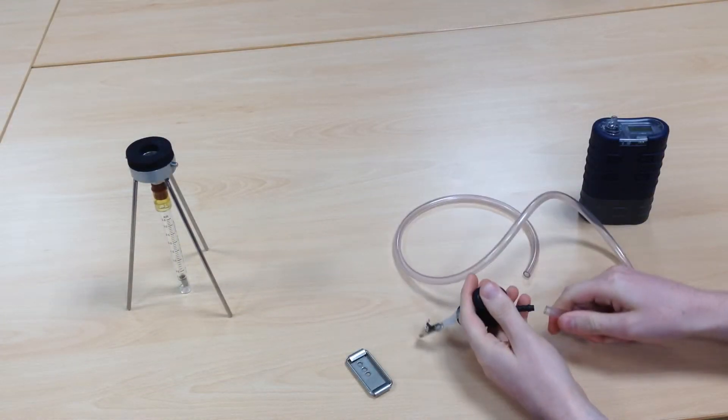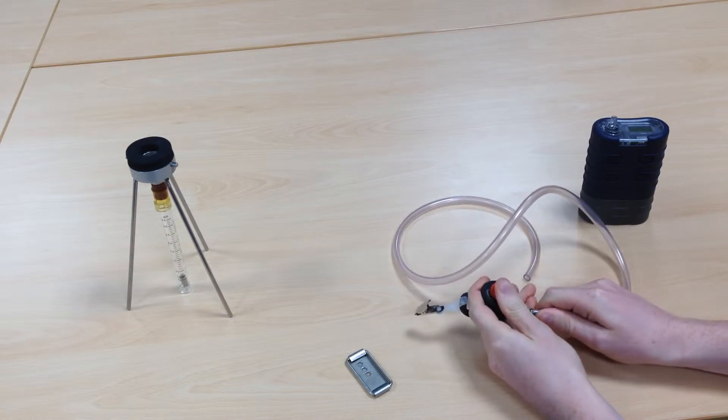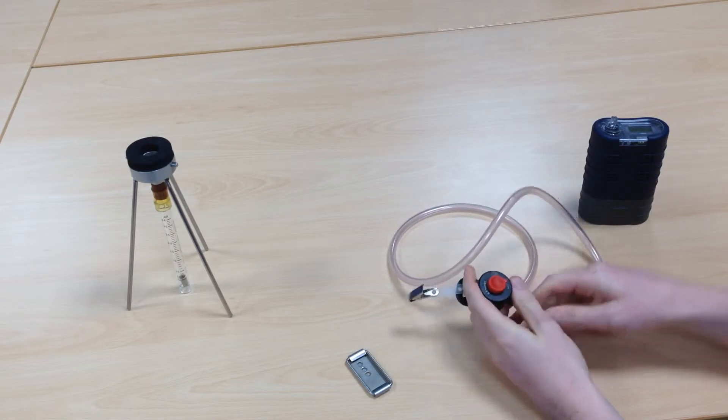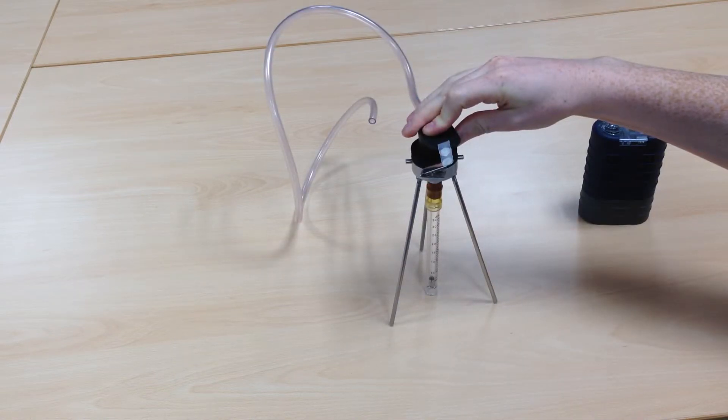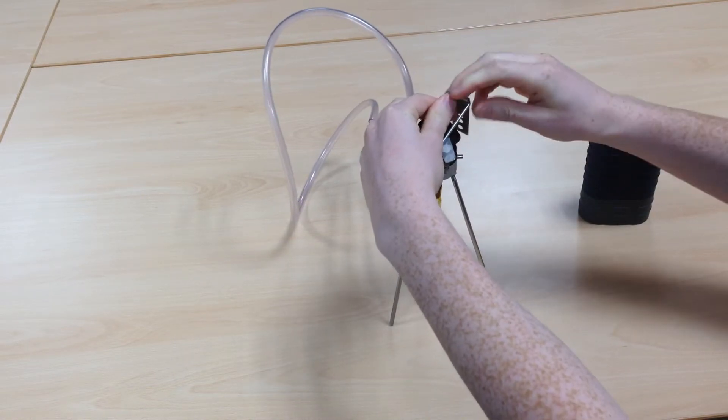After placing your filter media into the sampling head, you need to attach the Tigon tubing to the relevant part of the IOM equivalent sampling head. Remove the dust cap from the sampling head and secure it to the field rotameter using the bracket provided.